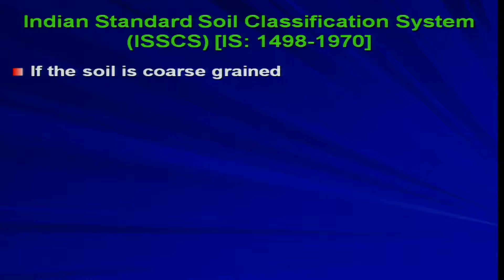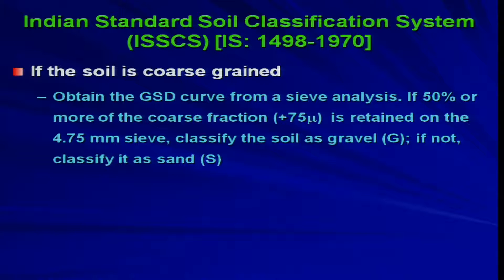Welcome back. In the last lecture we have seen how to classify the coarse-grained soil and how to get the different notations or symbols for different types of coarse-grained soil. We will continue with the coarse-grained soil. As seen in the last lecture, if the fine content is less than 5 percent — that is, if what is passing through 75 micron is less than 5 percent — then you need to concentrate more on the gradation characteristics, and based on that you get GW, SW, GP, or SP.